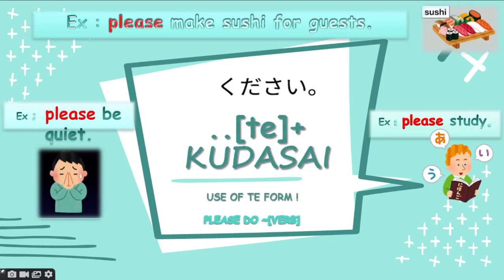In today's lesson, we will learn about te kudasai, which is used to make requests in Japanese. So this is a use of te form. For example: please make sushi for the guest, please be quiet, and please study. In general, it is 'please do a verb.'